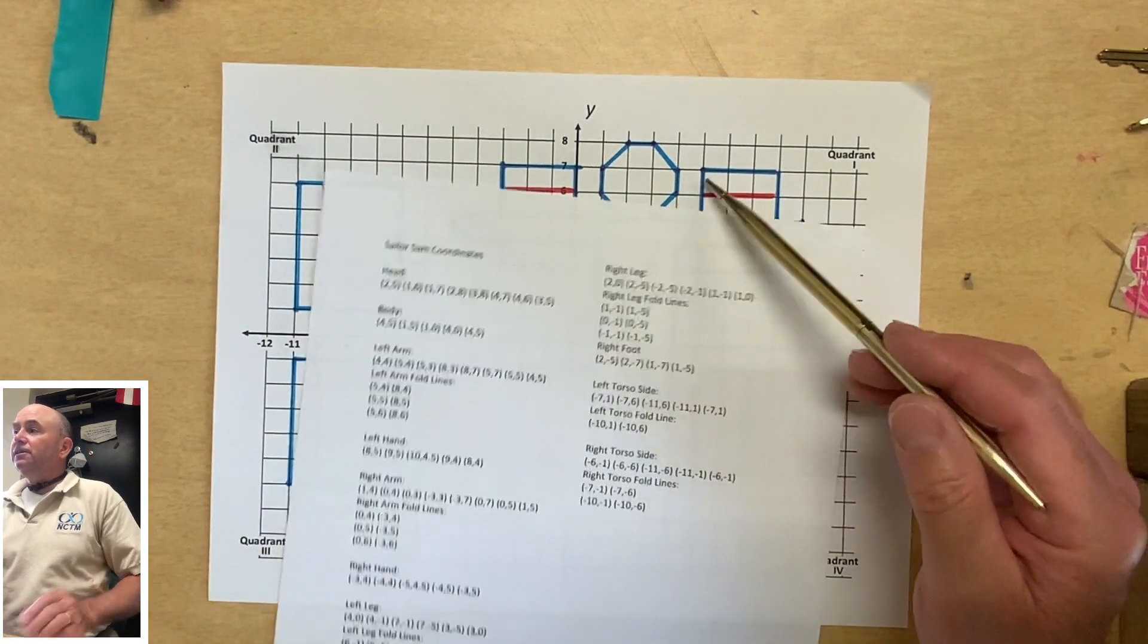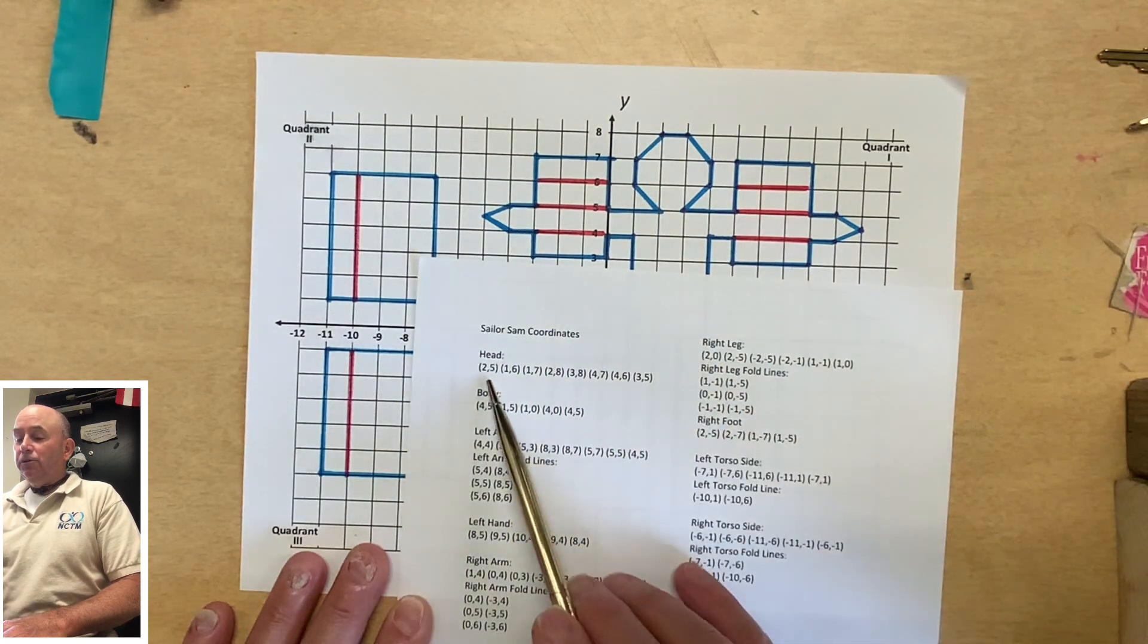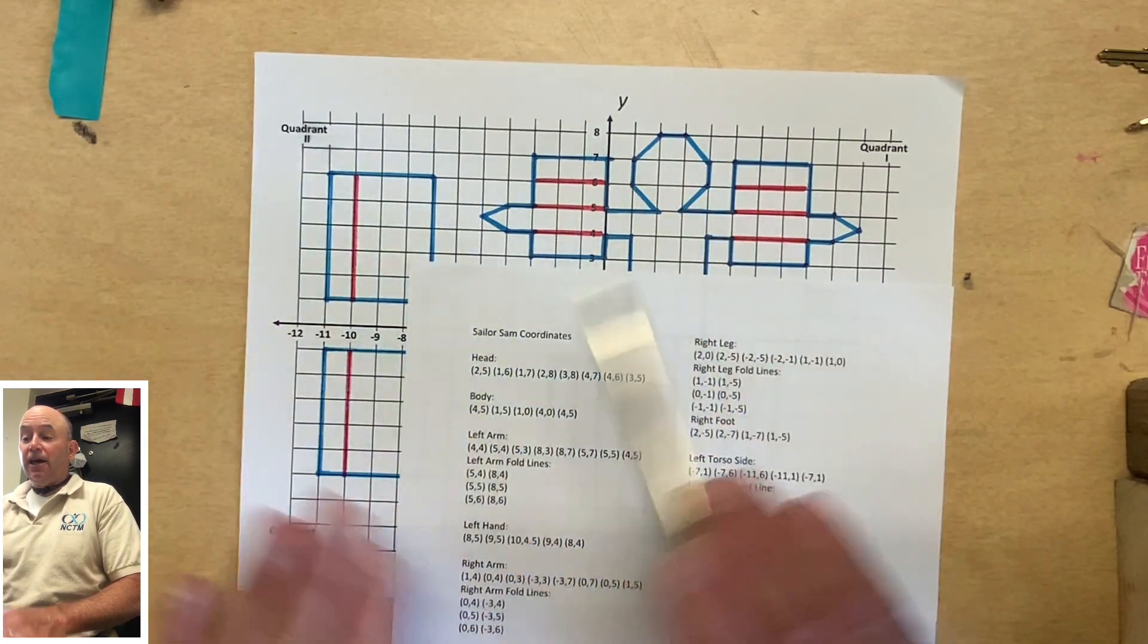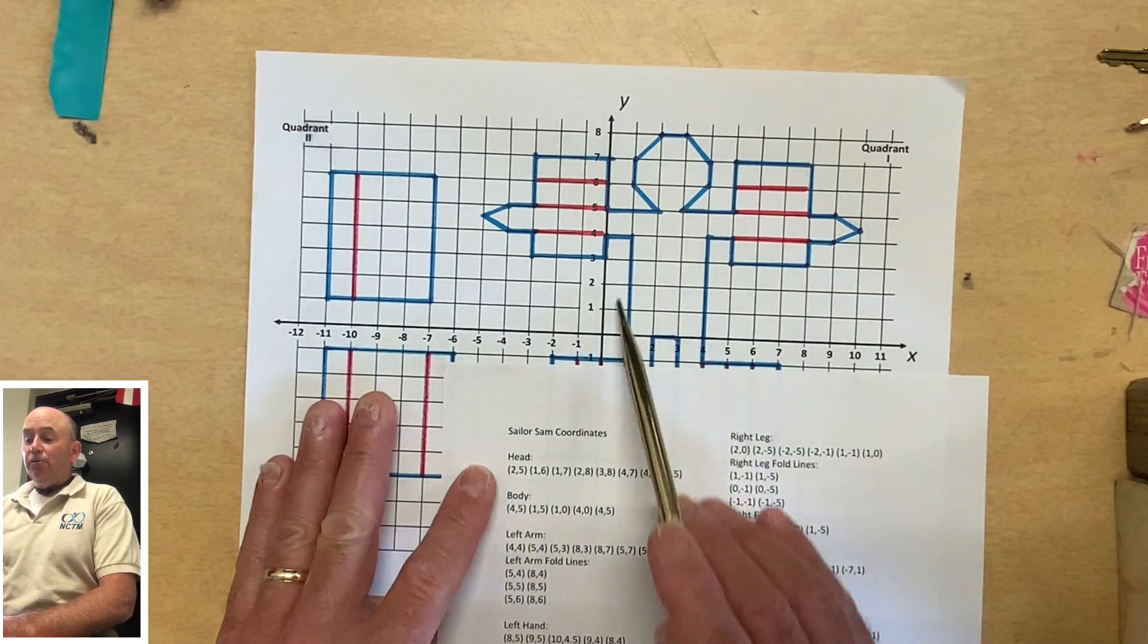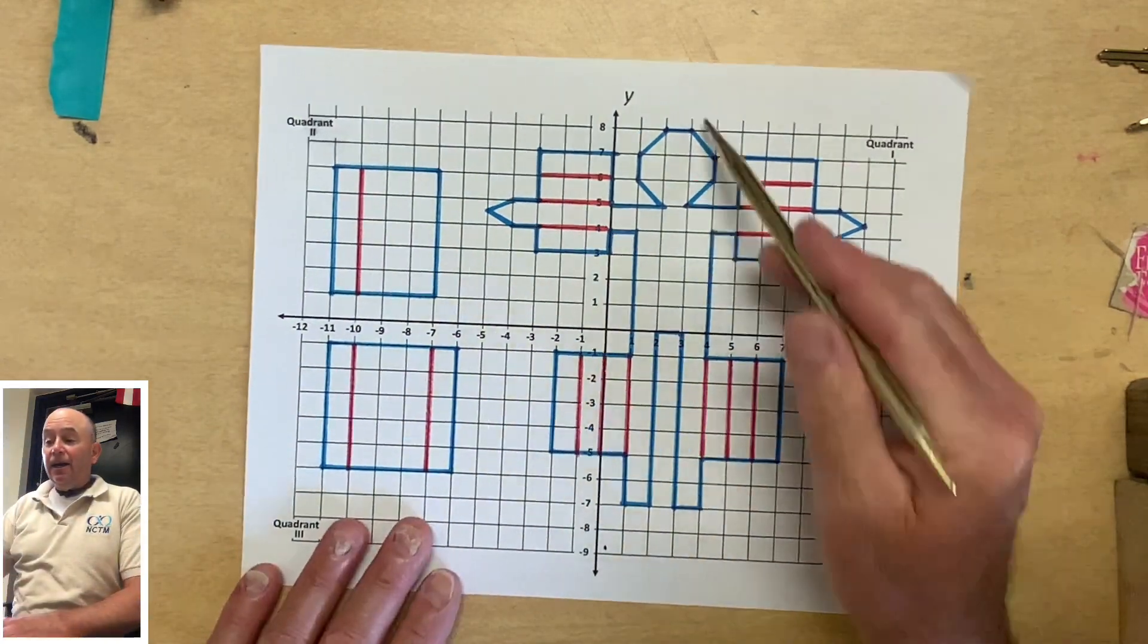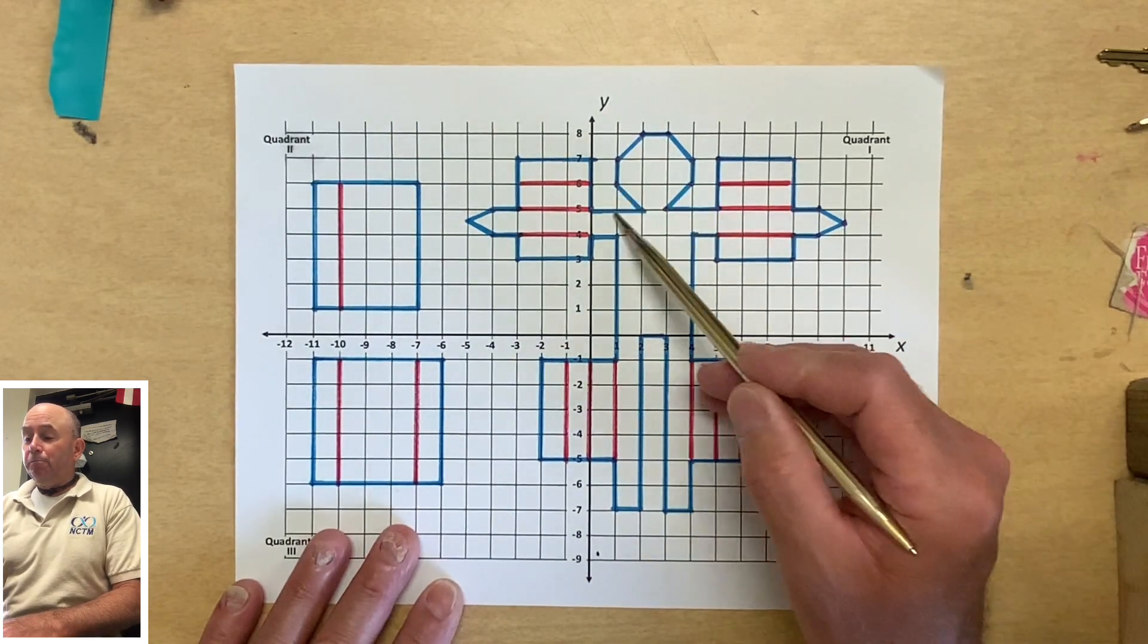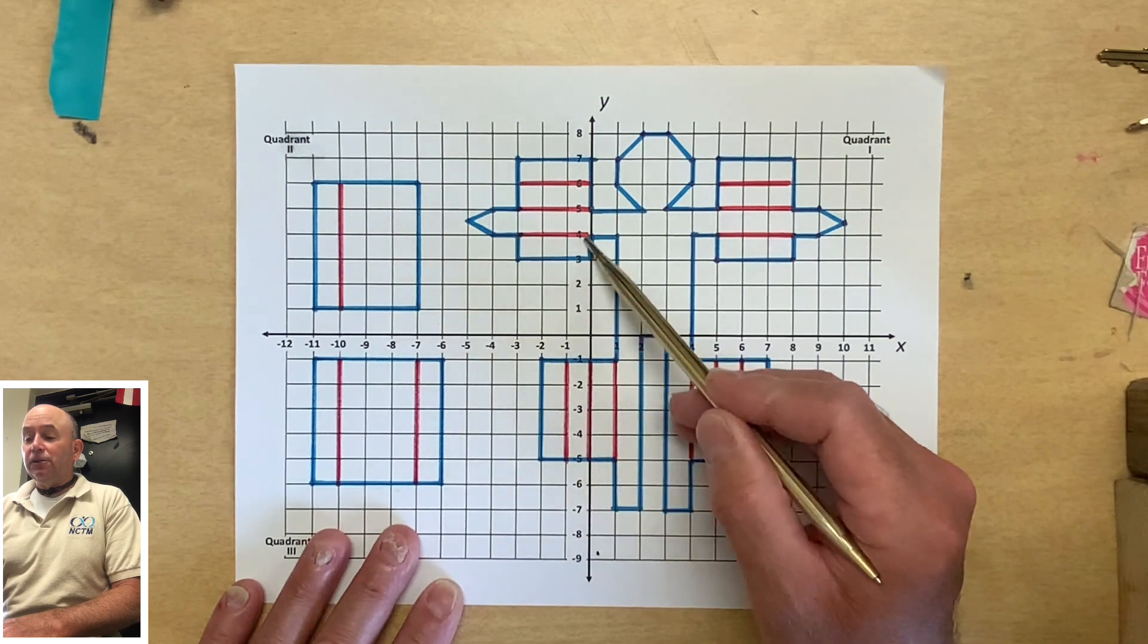Each of these, like for example, this is the head. The head was made from these points, simply drawing one section like that, stopping and then doing the body. Now what I did was I outlined where you'll be cutting. So wherever I have blue, that is where you will cut out Sailor Sam.